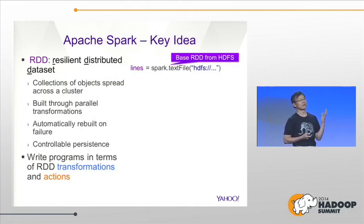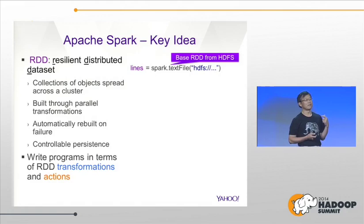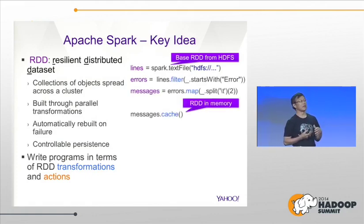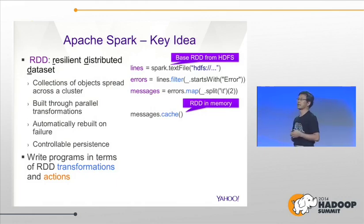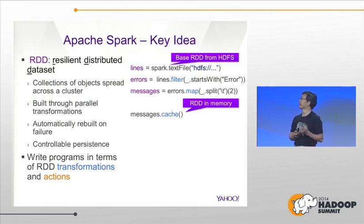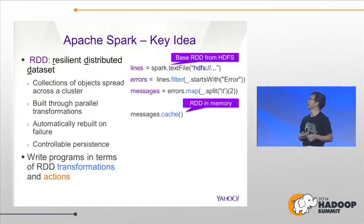First, using Spark, you create a context — here I just call it Spark. From there you say, let me construct the RDD for my HDFS files. You have this RDD I call 'lines.' Then from there you perform various transformations. First, let's say we only want to look at the error lines of the log — you apply a transformation operator called filter against your RDD called 'lines,' and give a function to find lines that start with 'error.' Now you have those error lines.